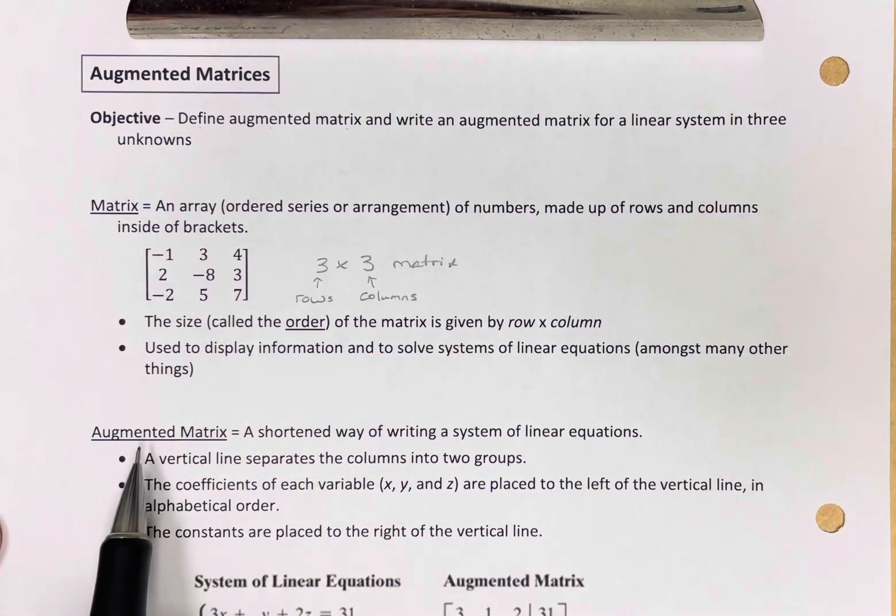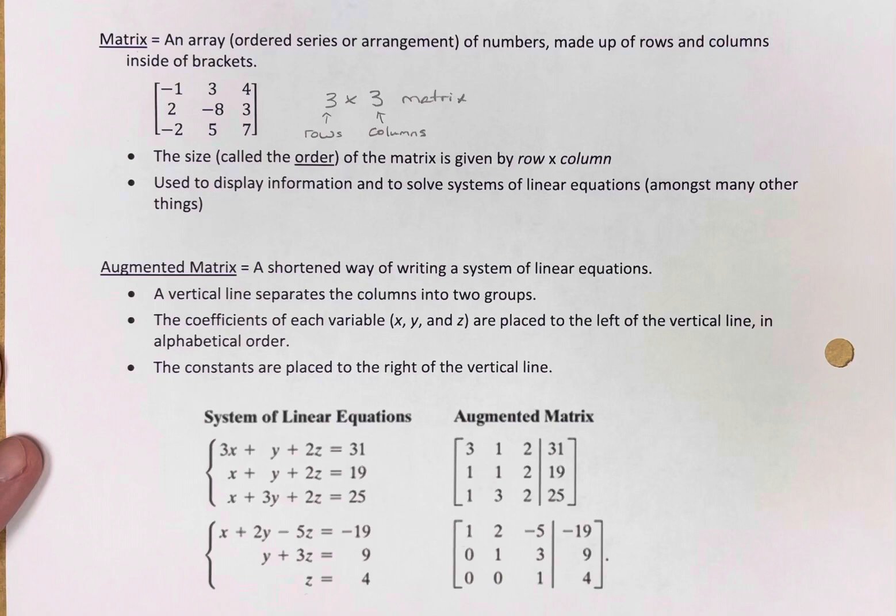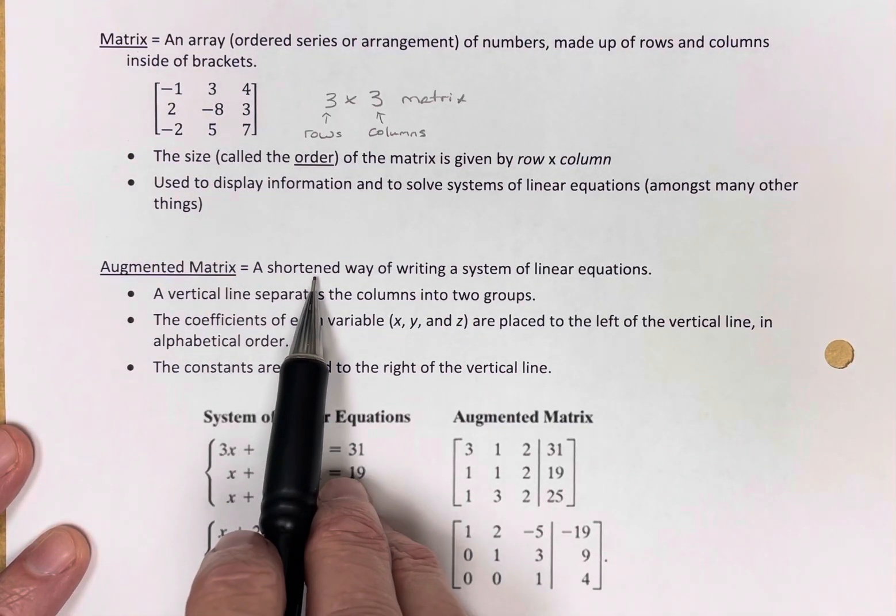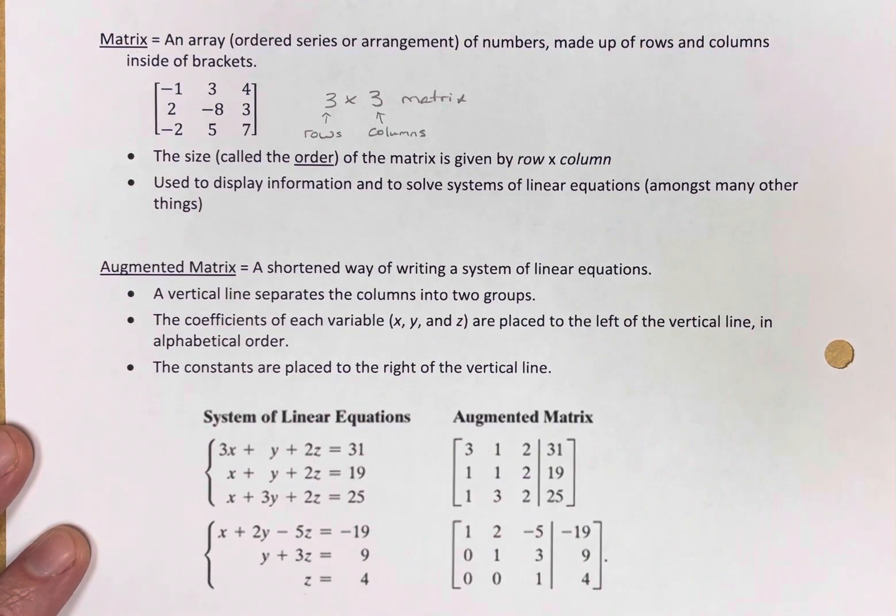Now we know what a matrix is. What is an augmented matrix? And this is where we're going to come into play for what we're interested in. An augmented matrix is a shortened way of writing a system of linear equations. That's what we're looking for.